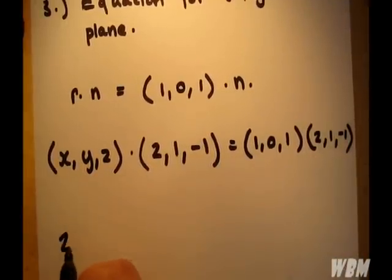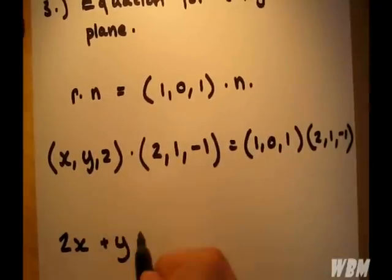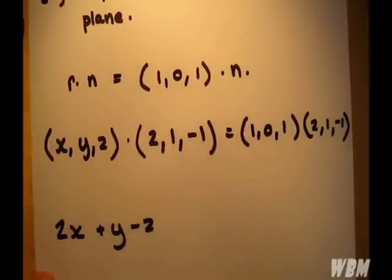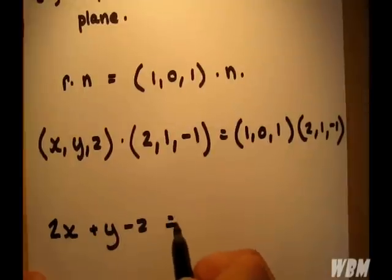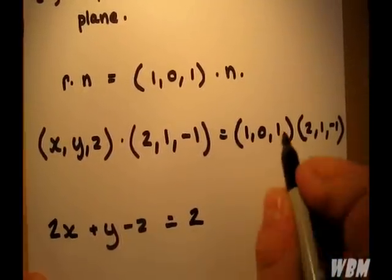So we have 2x plus y minus z equal to 1 times 2 is 2, 0 minus 1.